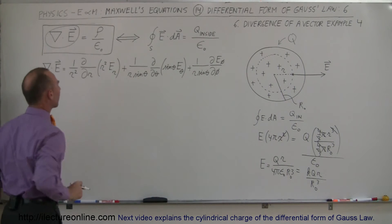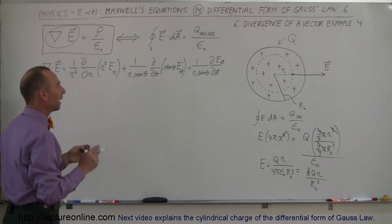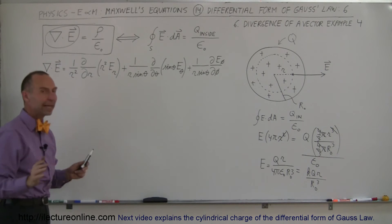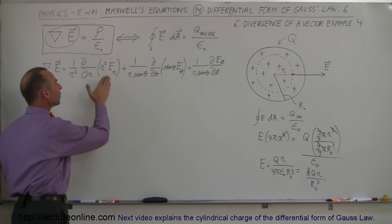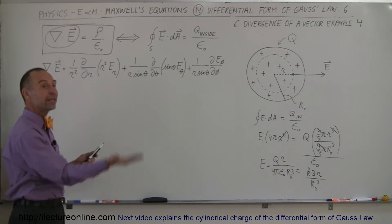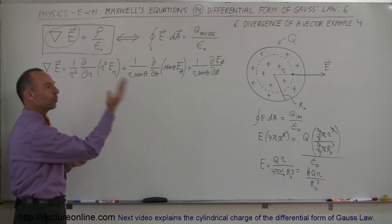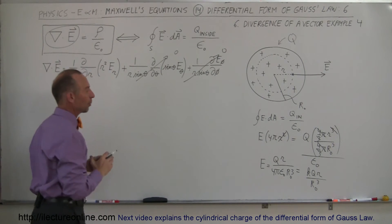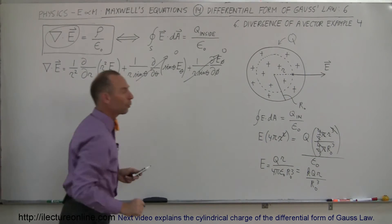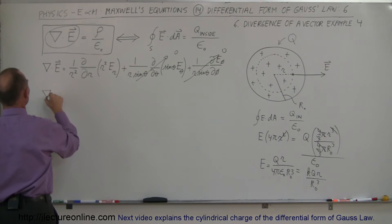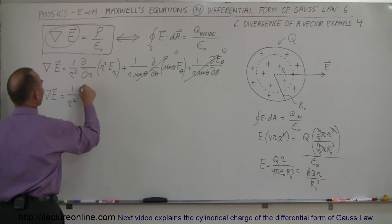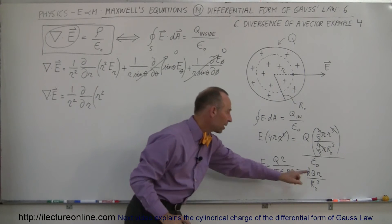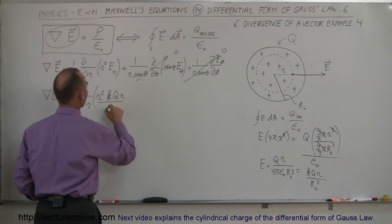Now let's go to the other side of the equation and use the divergence of the electric field. Since we're dealing with a sphere, we use spherical coordinates. The field is only changing in the radial direction, not in angle theta or phi, so those components are zero. We only need the radial term of the divergence: one over r squared times the partial derivative with respect to r of r squared times E sub r, where E sub r is KQr divided by R sub nought cubed.